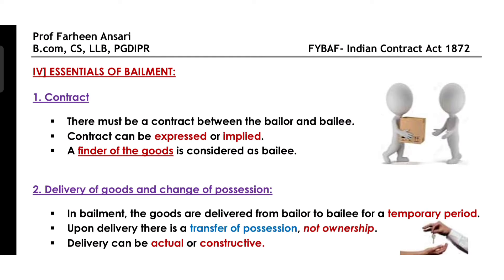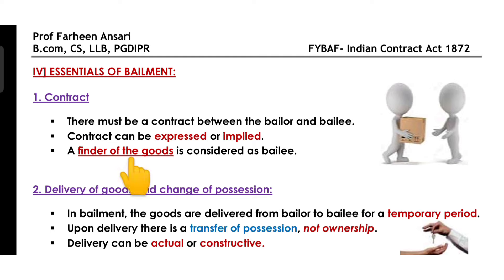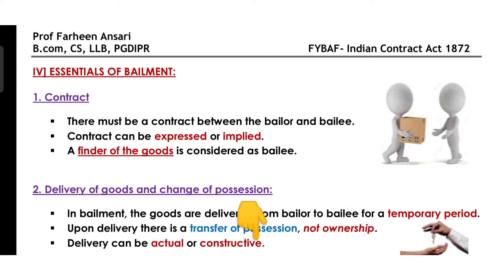Now let's understand the essential requirements for the contract of bailment. Number 1: the contract of bailment should be between two parties, which we refer to as bailor and bailee — by expressed or implied contract. Number 2: the essential condition is that goods should be delivered or handed over for a temporary period. In the meantime, the possession of the goods will change from bailor to bailee. But the ownership of the goods remains with the bailor. Delivery of goods can be actual or even constructive.